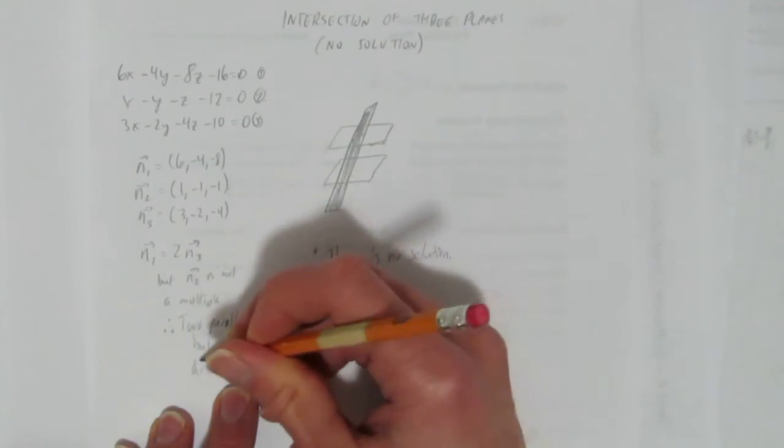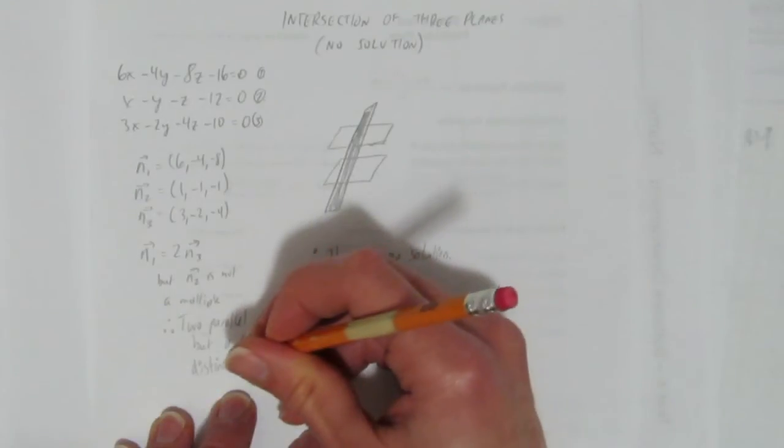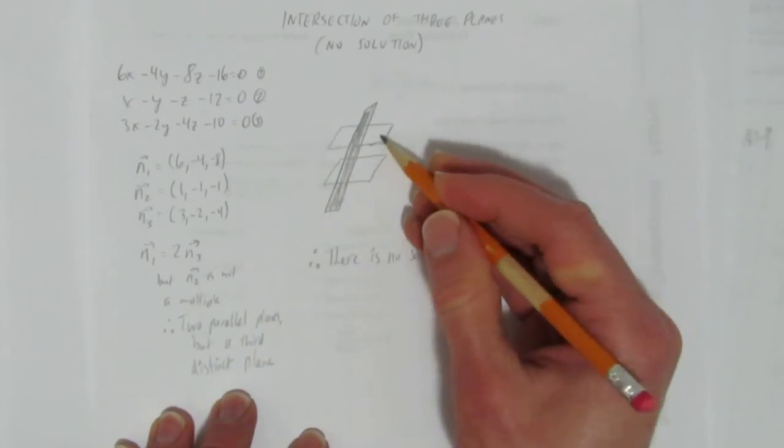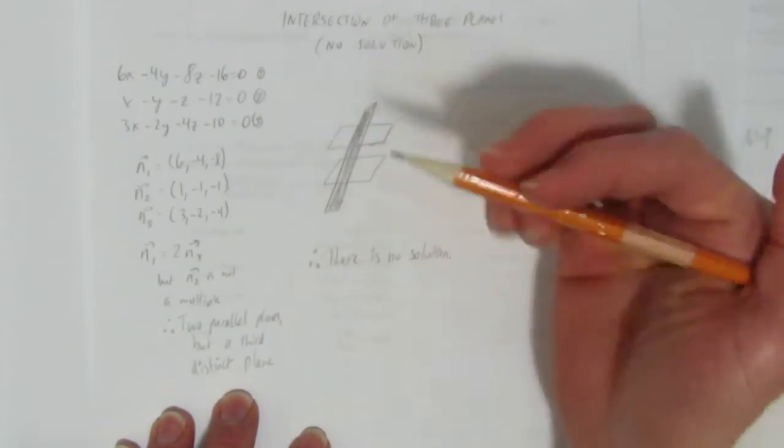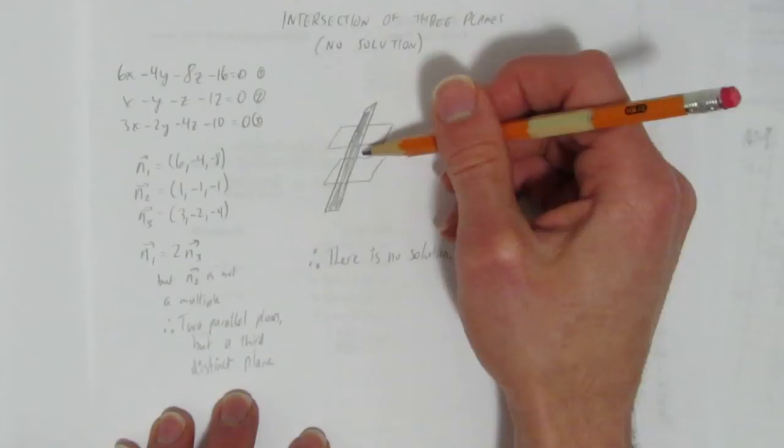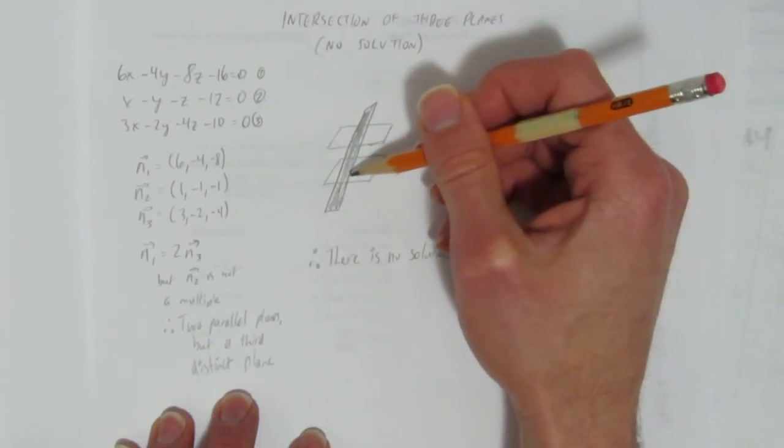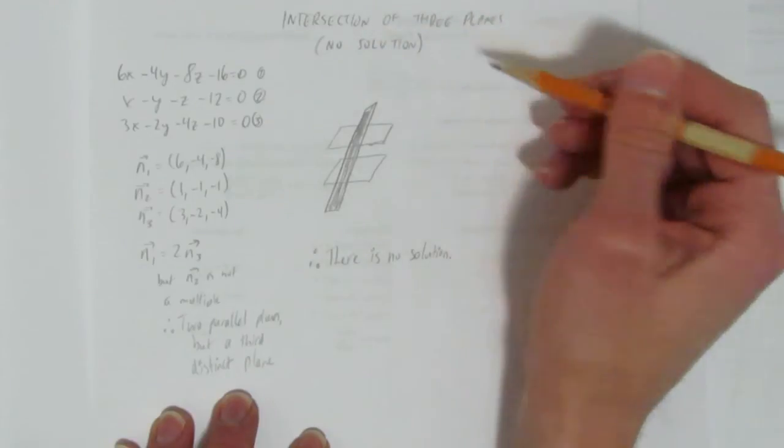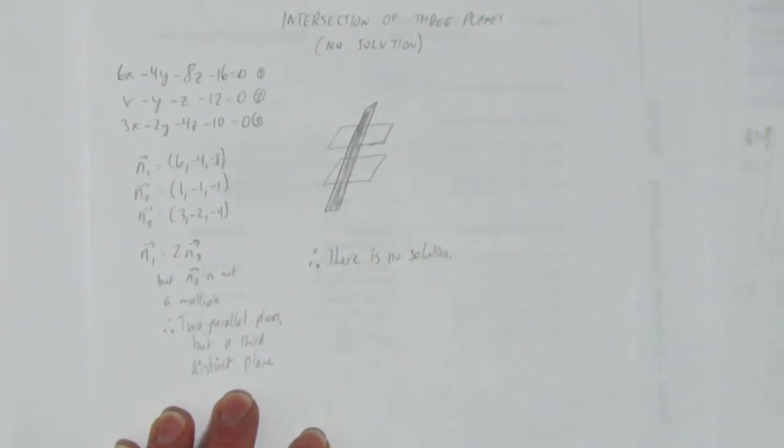And no matter where they are, we don't need to graph it on the axes. No matter where they are, it's got to be that there are two planes, maybe it's rotated somehow or in an angle, but we're going to have two parallel planes and a third plane somehow crossing them, but never in one spot, always in two different places. And a solution would have to be where they all intersect at the same place. Therefore, there's no solution.